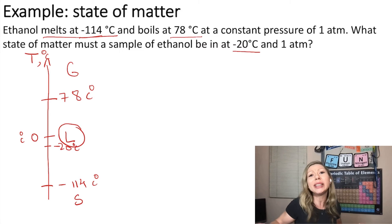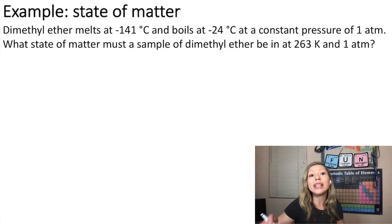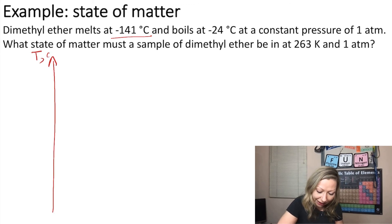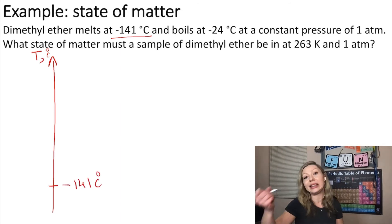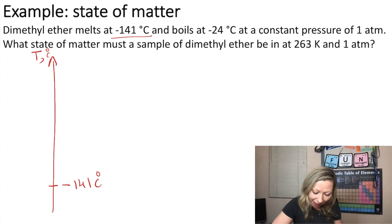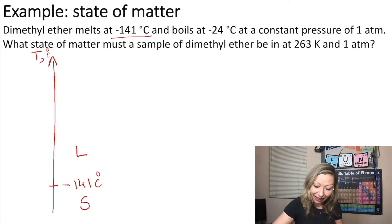I hope this makes sense. It's pretty simple, right? Let's take a look at another example. We have dimethyl ether, which melts at minus 141 degrees Celsius. I'm going to do the same graph where I have the temperature right here. Minus 141 degrees Celsius is the melting point, so below this I'm going to have a solid, above this I'm going to have a liquid.